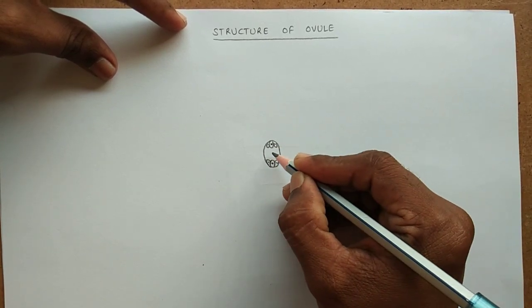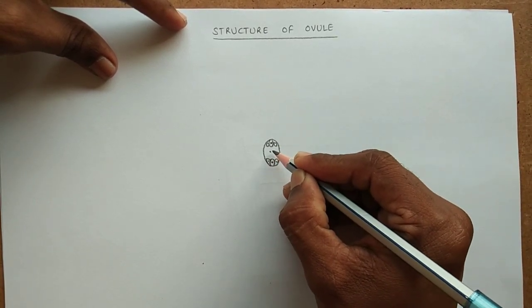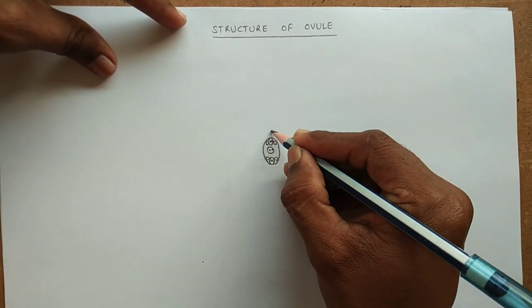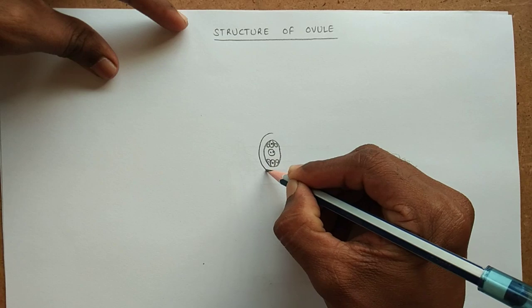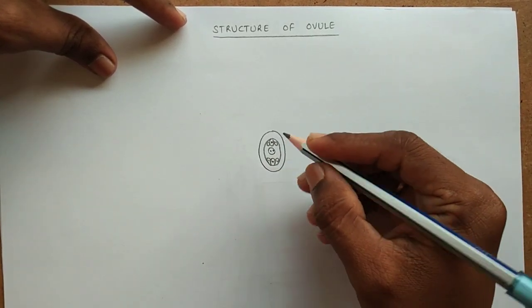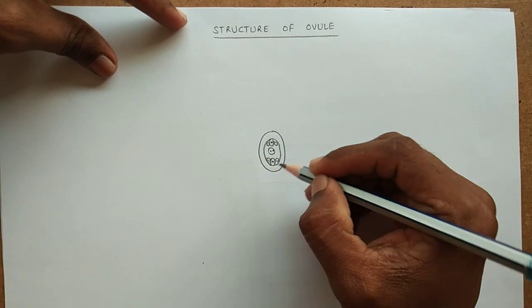We have to draw antipodals like this, and polar nuclei. After this, we have to draw an oval shape over here and it's into this oval.